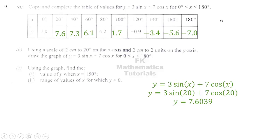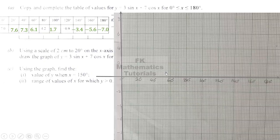Now for part b: using a scale of 2 centimeters to 20 degrees on the x-axis and 2 centimeters to 2 units on the y-axis, draw the graph of y = 3sinx + 7cosx for the given interval. Let's take our graph sheet and draw the axes.